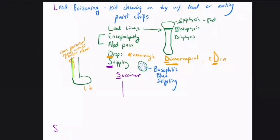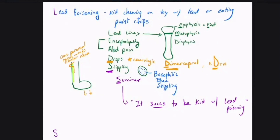The classic mnemonic here is: it sucks to be a kid with lead poisoning. Now, what is the basophilic stippling? Basophilic stippling is actually rRNA — it's a bunch of rRNA aggregates throughout your red blood cell. It's rRNA that your cell could not degrade because of the lead poisoning. Lead stops your heme synthesis pathway, and one of the side effects of that is the buildup of rRNA at the proximal end of the pathway.